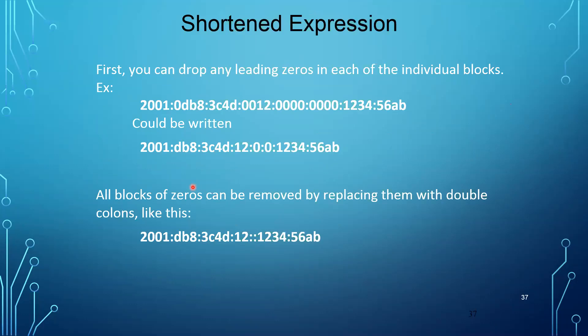Now let's compare the IPv4 format and the IPv6 format. The IPv4 format has four octets separated by dots, written in decimal. In IPv6, we have eight groups separated by colons, written in hexadecimal format. In hexadecimal, we have digits 0-9 and letters A, B, C, D, E, F.